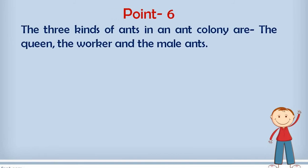The next point is point number 6. It is telling about the three kinds of ant in an ant colony. So they are having the three kinds of ant in their colony. The name of them are the queen, the worker and the male ants.